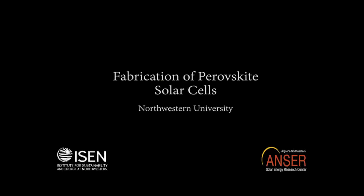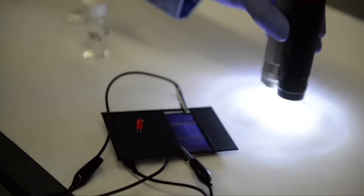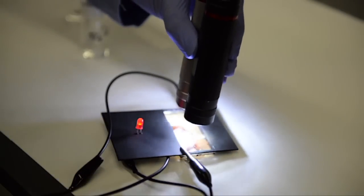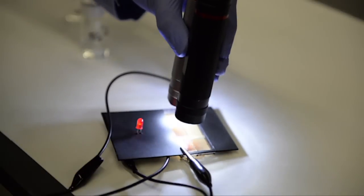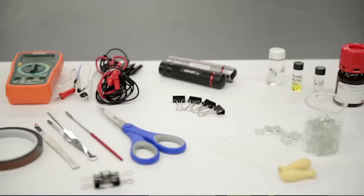In this video we are going to fabricate perovskite solar cells. A solar cell is a device that converts sunlight into electricity. The cost of fabricating one cell is less than 50 cents. It only takes a few hours and we use standard laboratory equipment.